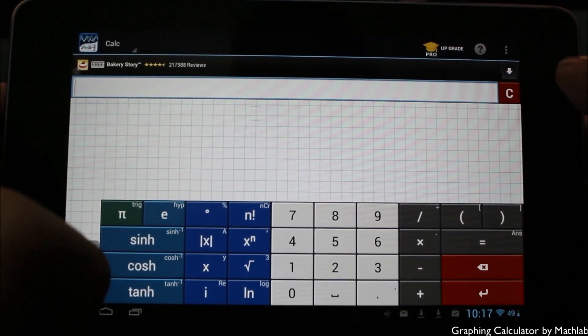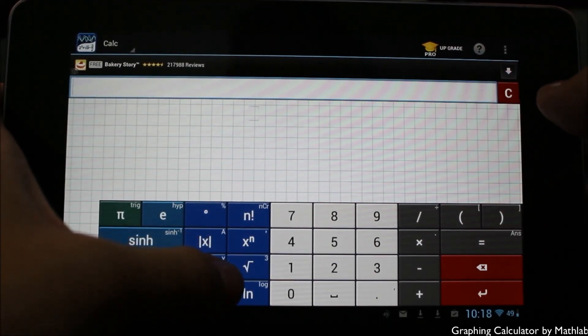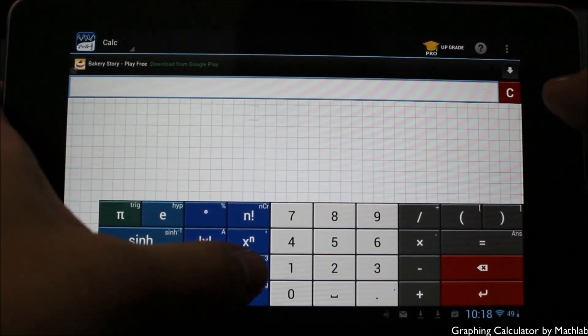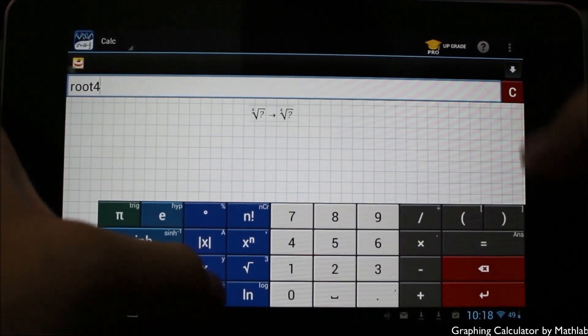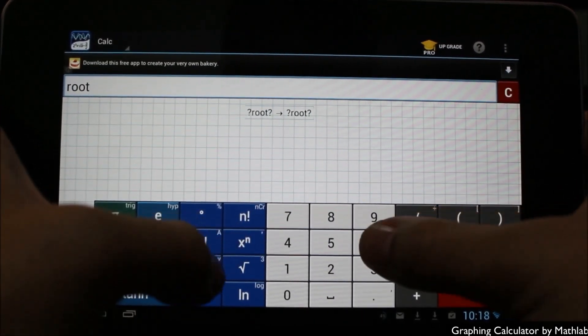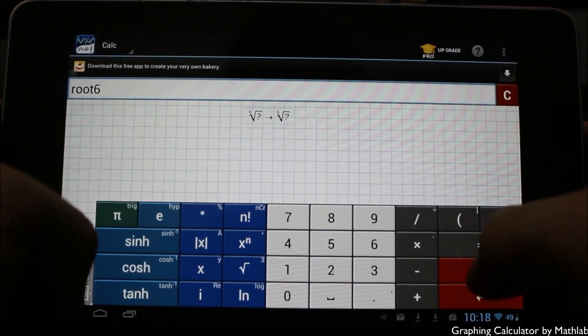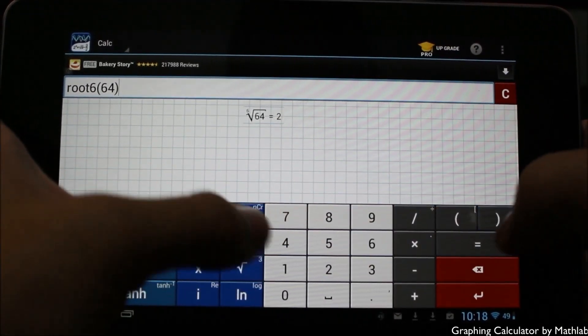Going down here, for example the cubes, if you want to type in any other cubes or roots. If I tap this you just get the square root, but if I hold it you get other options and I can easily change the number. So if I say root of 6 in this case and give it a number like 64, you can see that will automatically equal two.